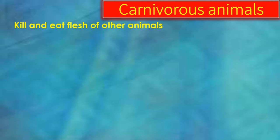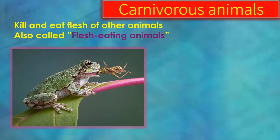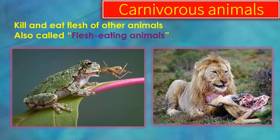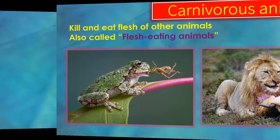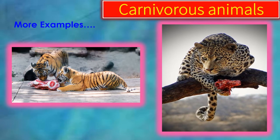Now, let us see about carnivorous animals. They kill and eat the flesh of other animals. They are also called flesh-eating animals. For example, frog and lion. Some more examples of carnivorous animals are tiger and leopard.